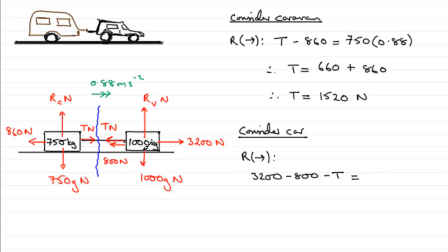That equals the mass which is 1000 times the acceleration which is positive 0.88. If you rearrange this and make T the subject, you should find you get this result. 3200 minus 800 is 2400 minus T equals 1000 times 0.88, which is 880.